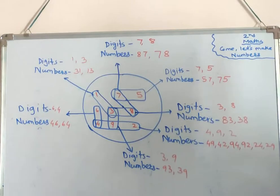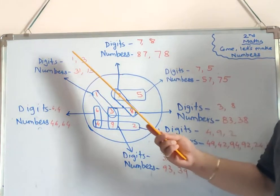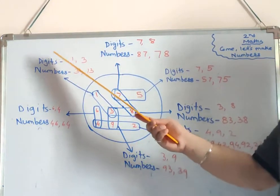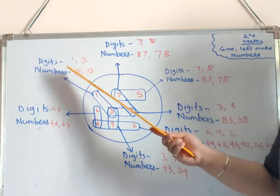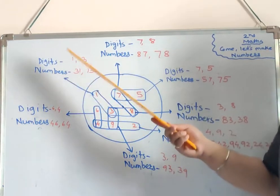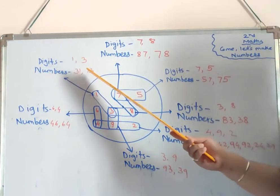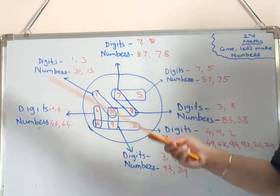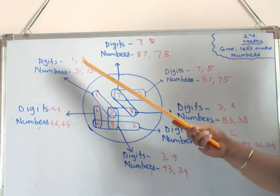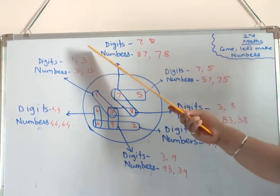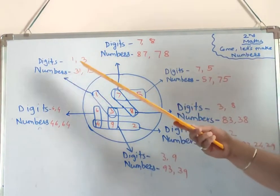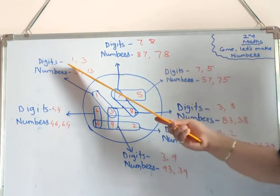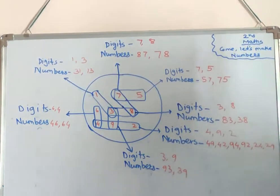Lastly, digits one and three. Take one in the units place — thirty-one. Take three in the units place — thirteen. So 31 and 13 are the two numbers formed from the digits 1 and 3.